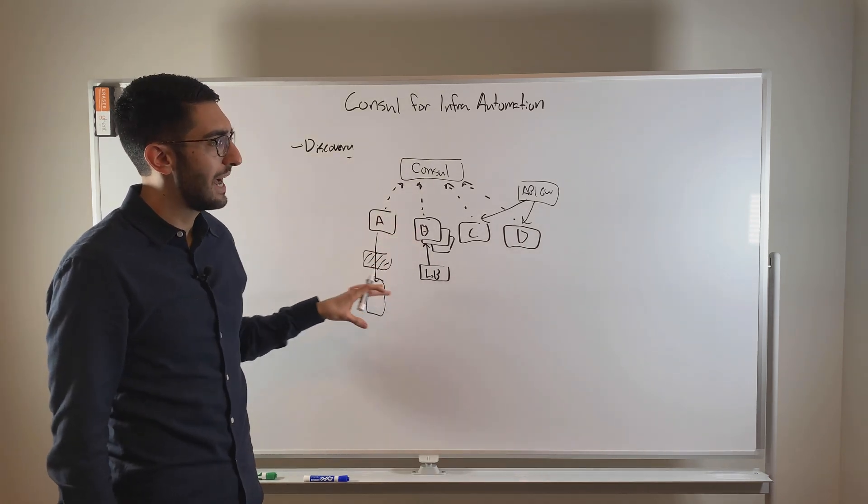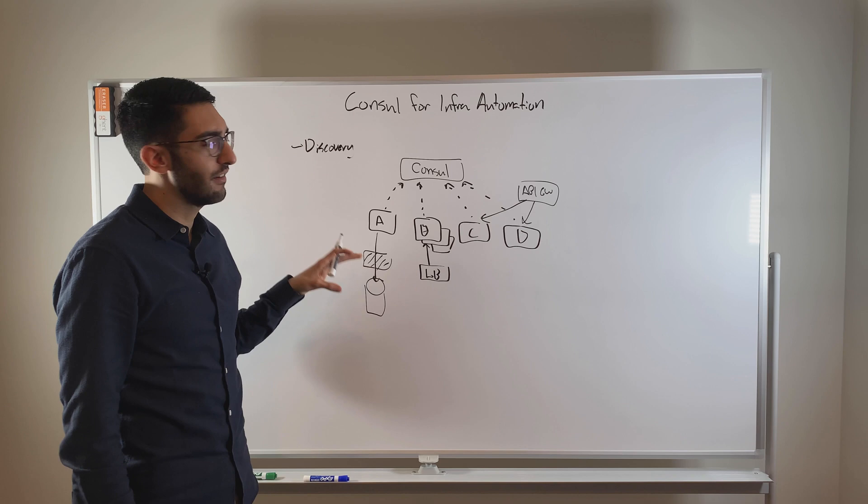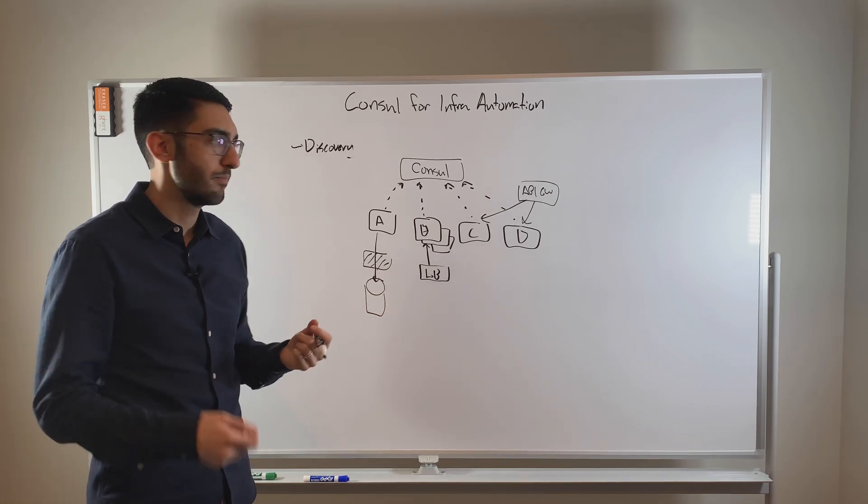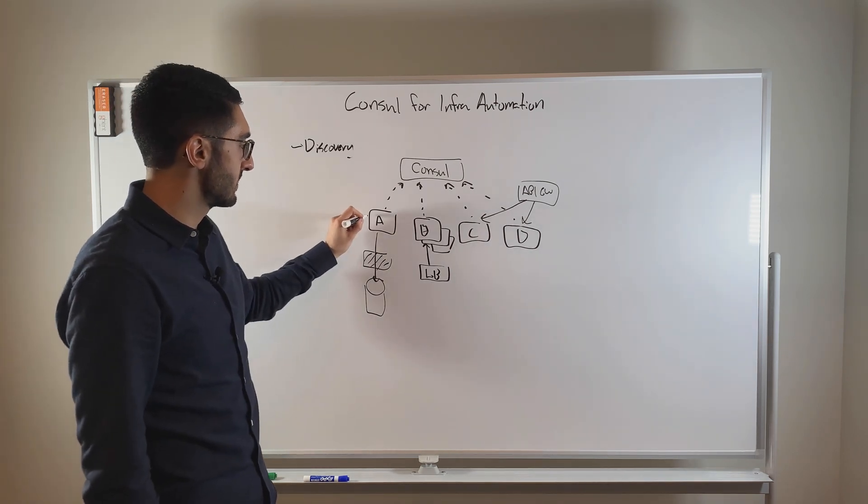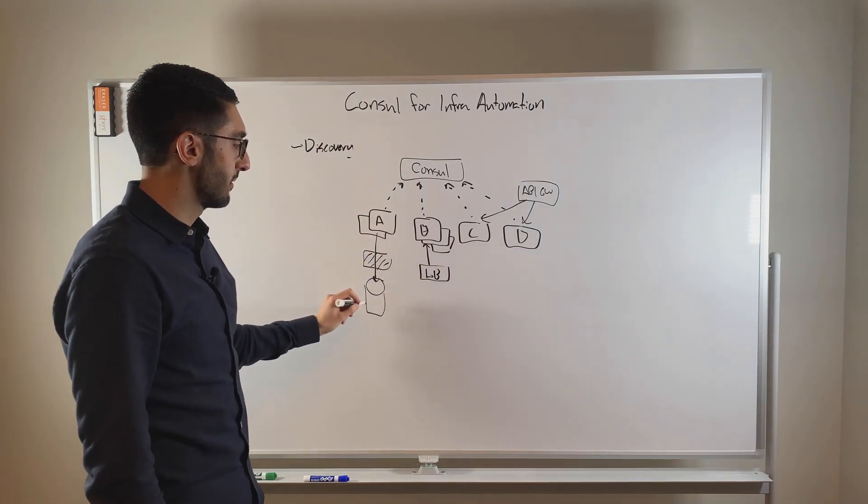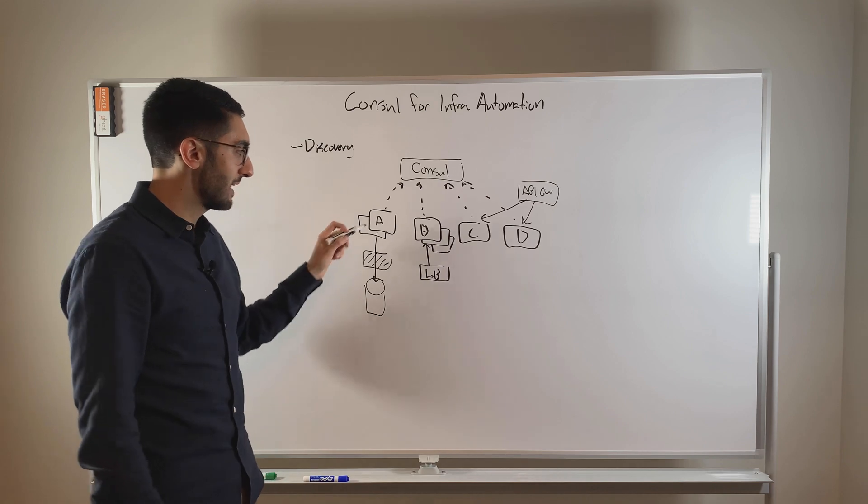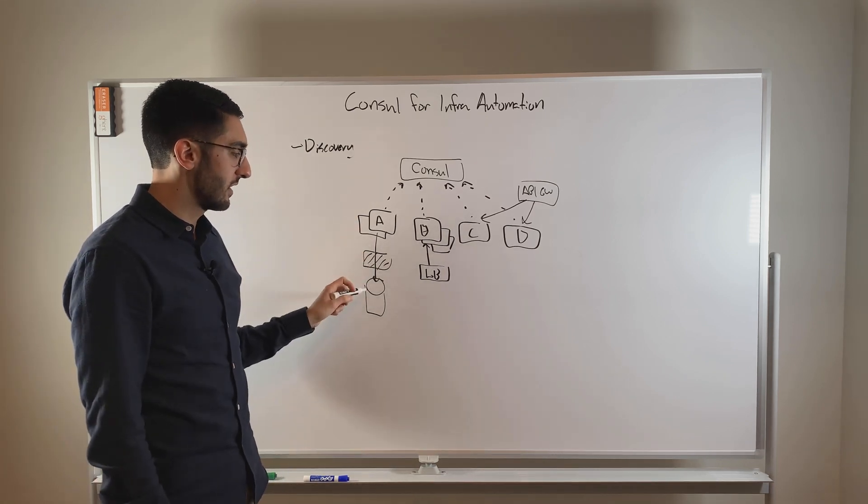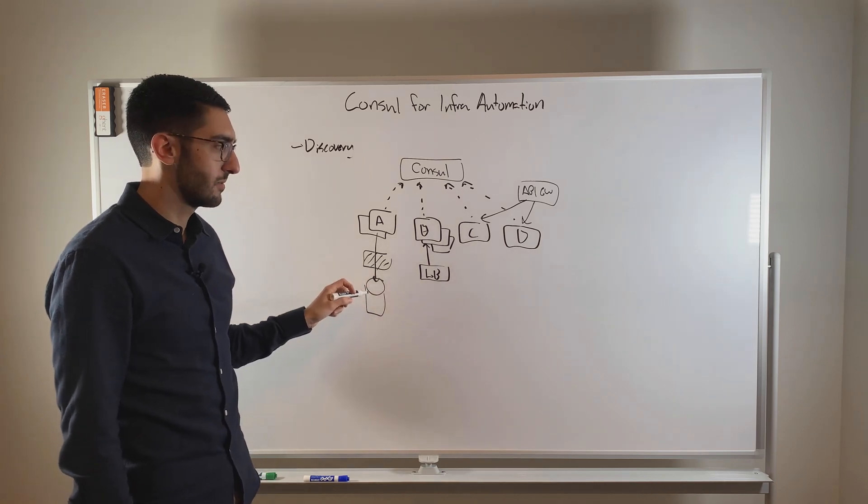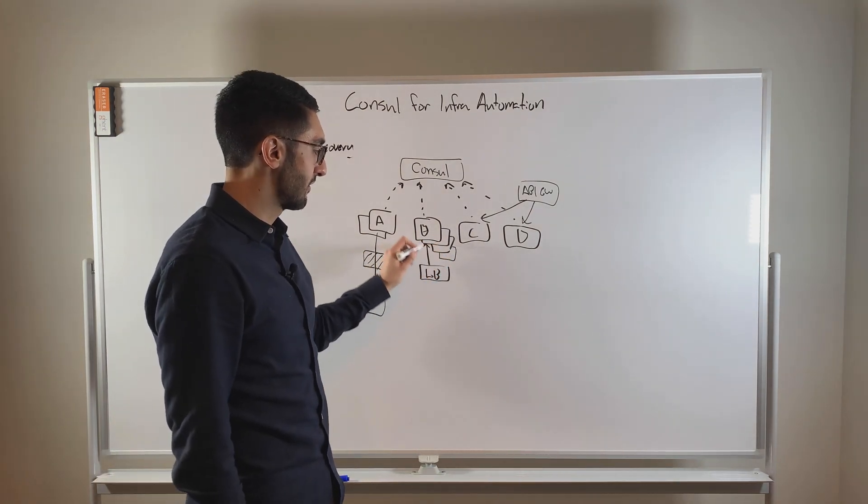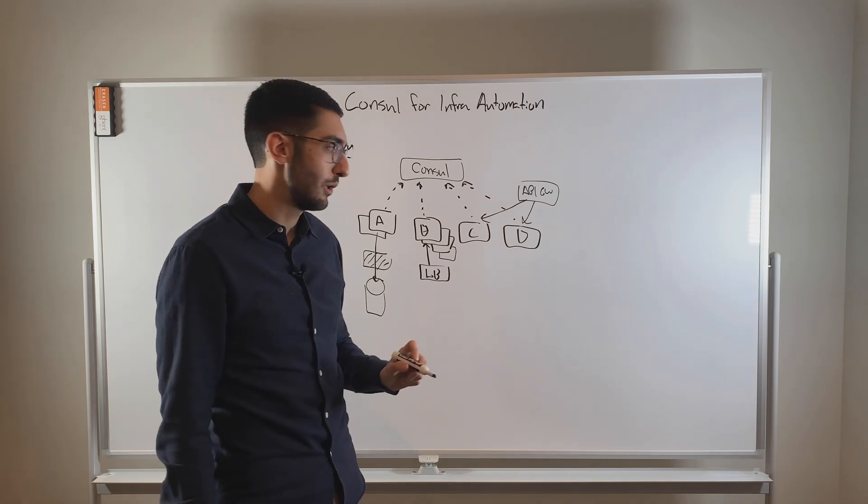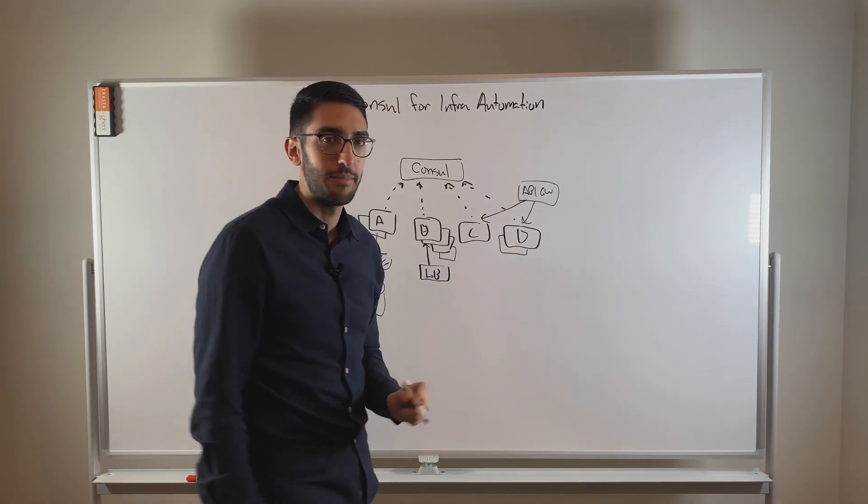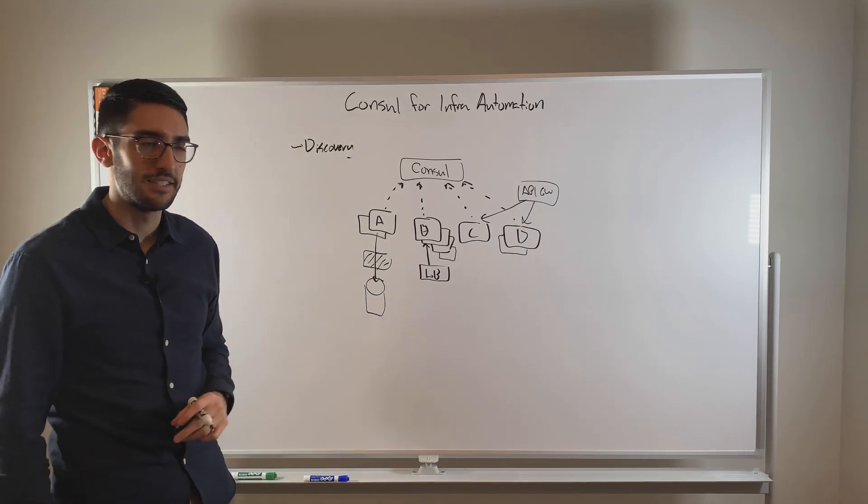I think a common challenge that we end up seeing is oftentimes the changes to these services sit behind a ticketing mechanism. So if I'm deploying a new instance of A, and that thing needs to be able to reach the database, oftentimes I have to file a ticket and wait for someone to manually update this firewall rule. Or similarly, if I launch a new instance of B, you have to file a ticket and someone updates the load balancer, or for scaling system D up, someone has to manually update the API gateway to add it into configuration.